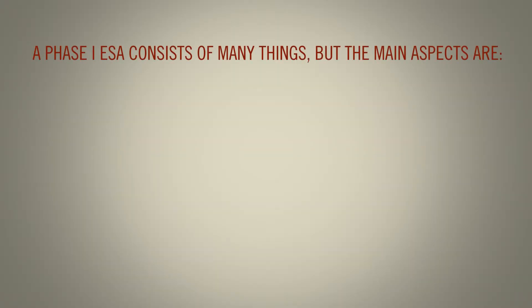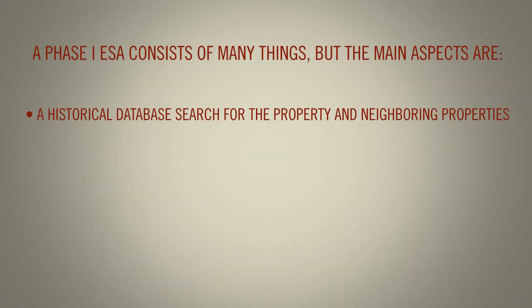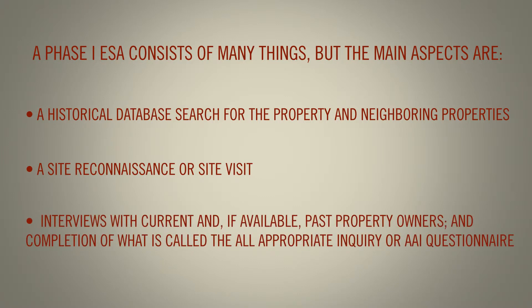A Phase 1 ESA consists of many things, but the main aspects are a historical database search for the property and neighboring properties, a site reconnaissance or site visit, interviews with current and, if available, past property owners, and completion of what is called the All Appropriate Inquiry questionnaire.